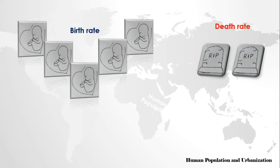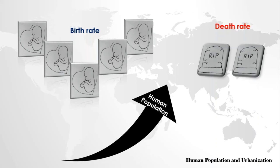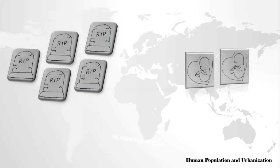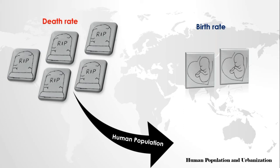If in our country the birth-to-death ratio is 5 to 2 — in other words, every 5 people born, 2 people die — the human population size in our country will increase. If the death rate is larger than the birth rate, the population size will decrease. And if our country's death-to-birth ratio is 5 to 2 — every 5 people die, 2 people are born — our country's human population will decrease. If the death rate is larger than the birth rate, the population size will decrease.